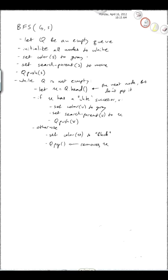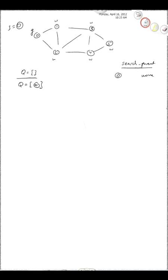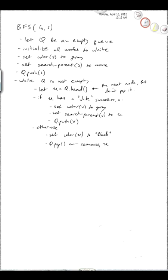The next step is to set the color of S to gray, because we just got dropped onto S and it's the first node that we see. We're going to set its search parent to none and push it onto the queue. So S over here, its color used to be white, but now we change it to gray. Node 0's search parent is going to be none. Then we add it onto the queue. At this point we've initialized everything and we're ready to start the loop.